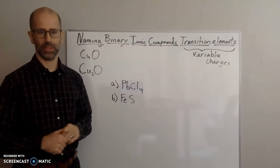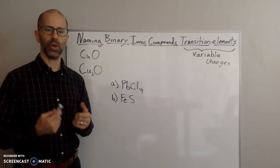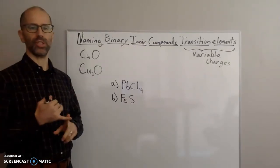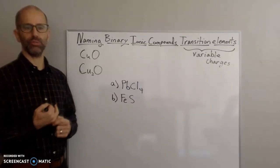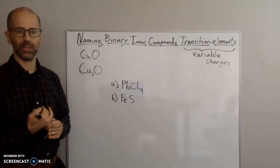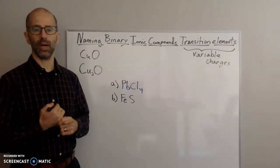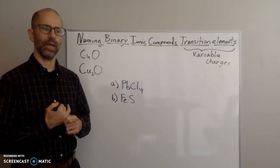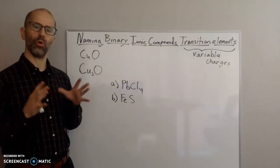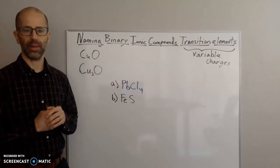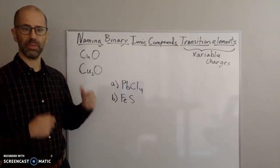Not all transition elements have a variable charge, but most of them do. There are a few exceptions: silver only has a plus one charge, zinc has a plus two charge, scandium has a plus three charge, and cadmium has a plus two charge. All of those only have one charge, so this naming approach is not going to apply to them. All the rest that have multiple charges are going to need to be named a little bit differently.